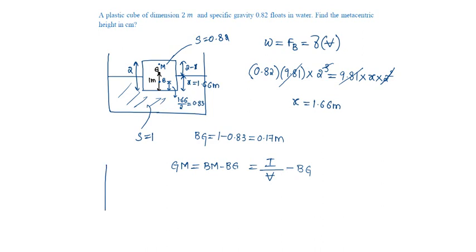Let us draw this projection, this is 2 meters by 2 meters. I about this axis, so 2 into 2 cubed by 12, by the submerged volume 2 squared area and depth of submergence 1.66 minus BG 0.17, which will be equal to 0.0308 meters, that is 3.08 centimeters.